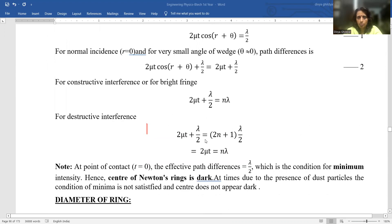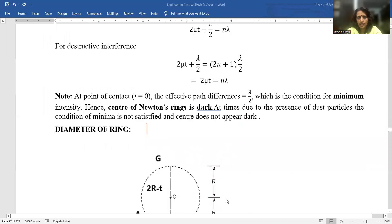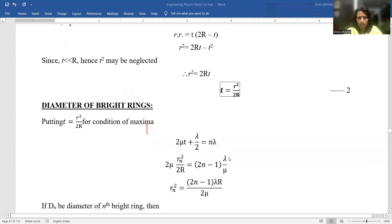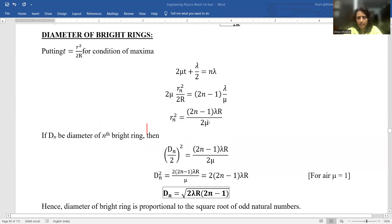2μT for constructive interference plus λ/2 is Nλ. So, I put this value here and I get the radius of the Nth ring, diameter of the Nth ring.